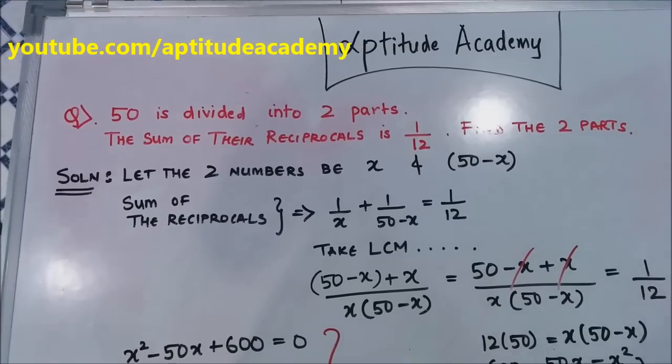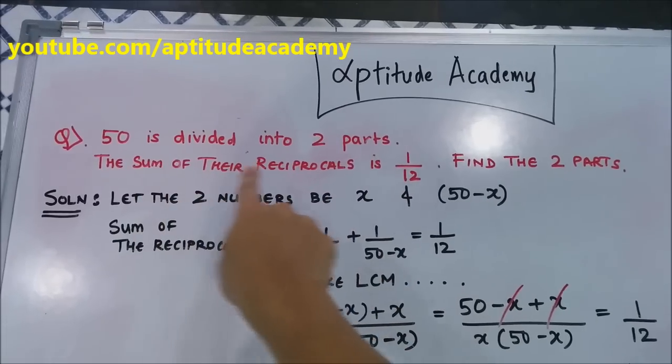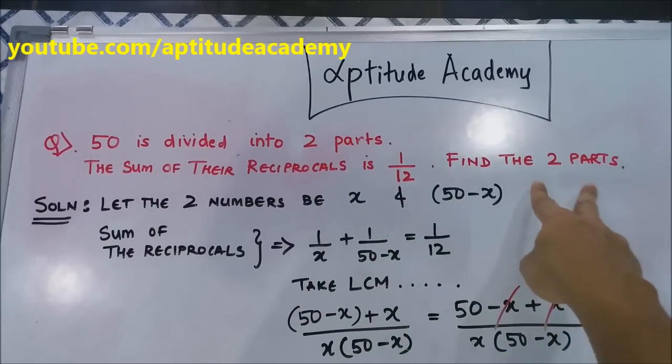Hi, I'm Daniel Sousa and welcome to Aptitude Academy. The problem today is: 50 is divided into two parts. The sum of their reciprocals is 1/12. Find the two parts.